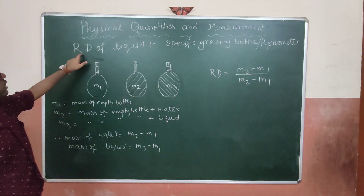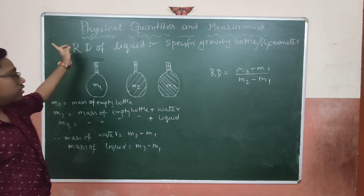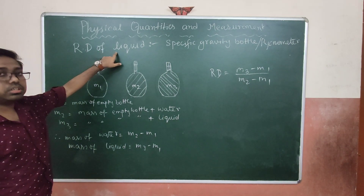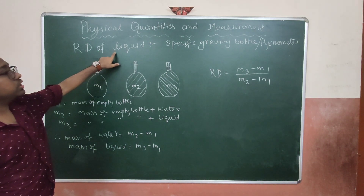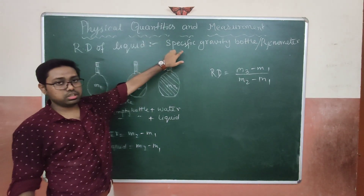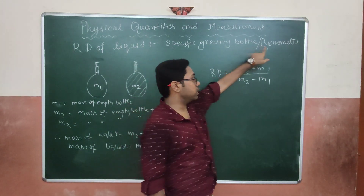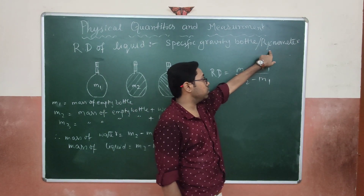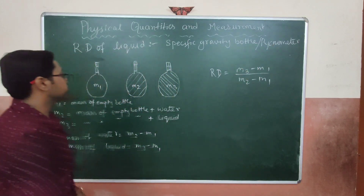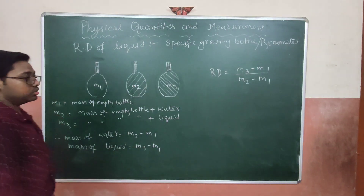Now we will learn how to find the relative density of a liquid. We find the relative density of a liquid using a special bottle known as a specific gravity bottle, also called a pycnometer (P-Y-C-N-O-M-E-T-E-R). These are the specific gravity bottles used for this purpose.